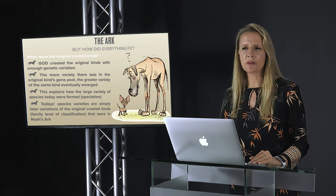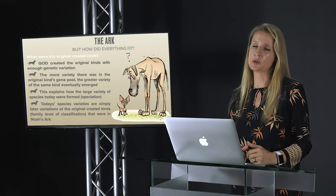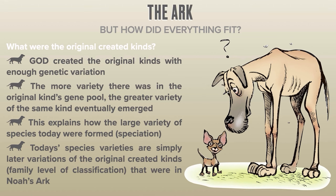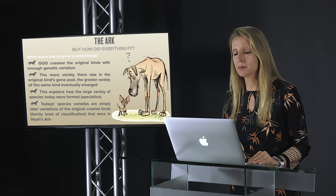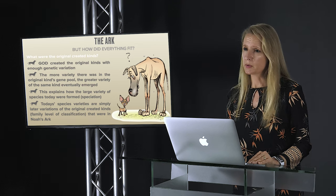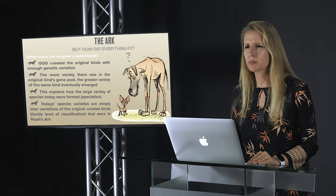Many people wonder how such a large variety of animals could have fitted into the ark. However, today's species varieties are simply later variations of the original created kinds at the family level that were in Noah's ark. The age-old argument about the space problem in the ark would end if people stopped giving each single animal five different names and then trying to make it a problem for Noah.